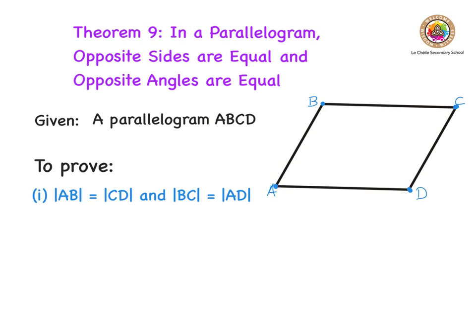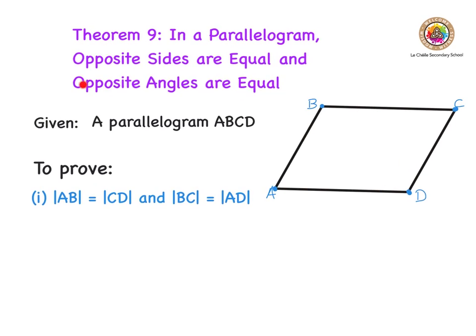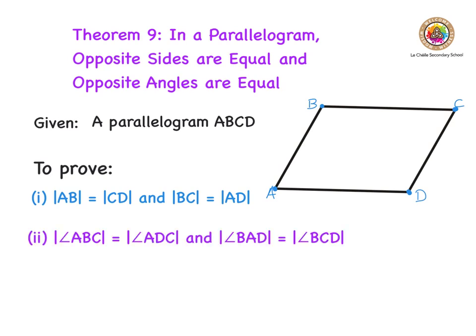The second part of our proof, we're asked to show that opposite angles are equal. We'd be asked to show that angle BAD is equal to angle BCD, and likewise angle ABC is equal to angle ADC. So we write that down as part of our proof: angle ABC equals angle ADC, which is this angle here; and angle BAD equals angle BCD, which is this angle here.